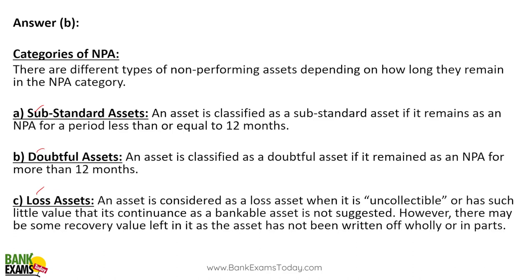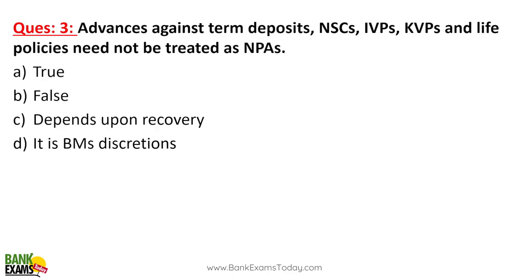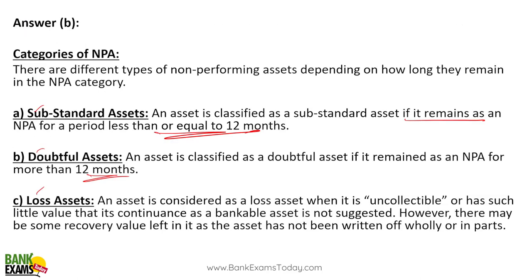An asset is classified as substandard if it remains an NPA for a period less than 12 months. If it is more than 12 months, it is doubtful. If the asset is uncollectable, then it is a loss asset. Please remember these three categories of NPA — substandard, doubtful, and loss assets. That is really, really important.